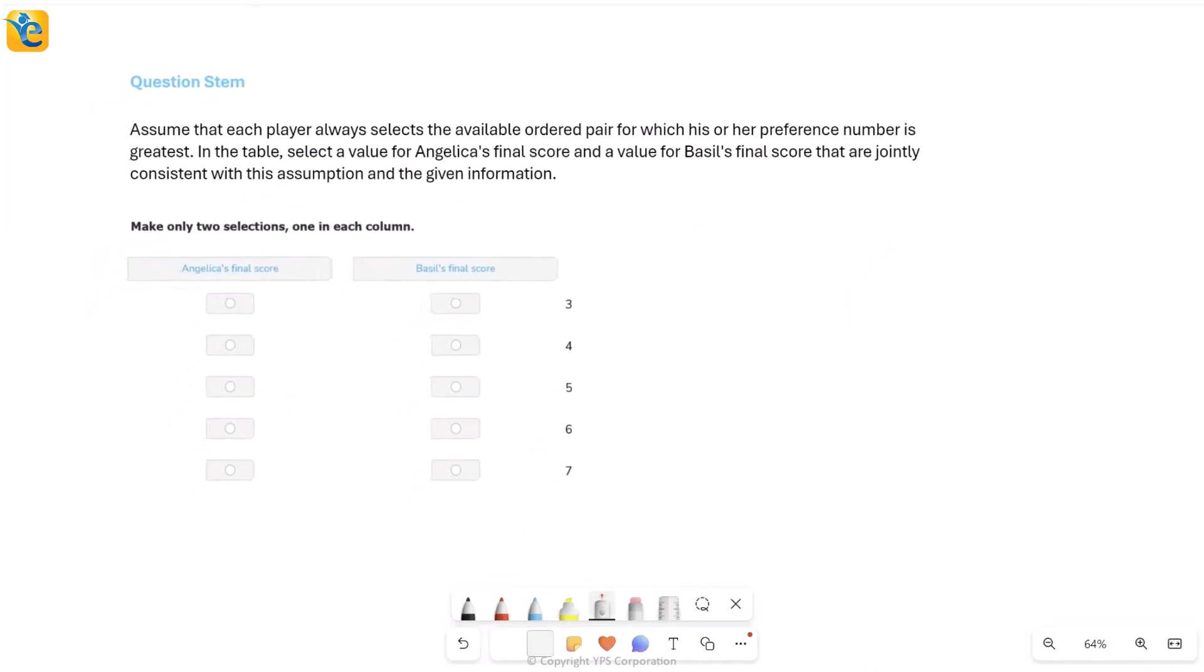So here is your question. Now this is where they give you more information about how the picking happens. Each player always selects the available ordered pair for which his or her preference number is greatest. This now gives you all the information you needed to decide which pair will be picked up. Now after all of this is done, this picking up is done, the game is over, final score will be computed.